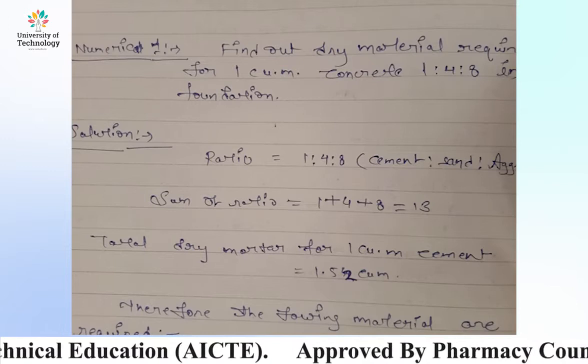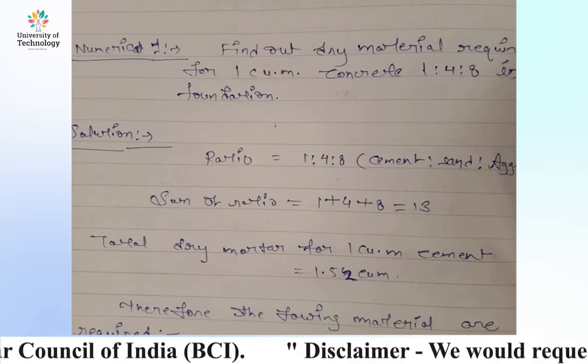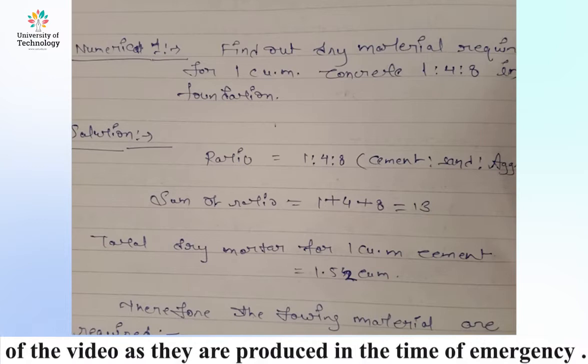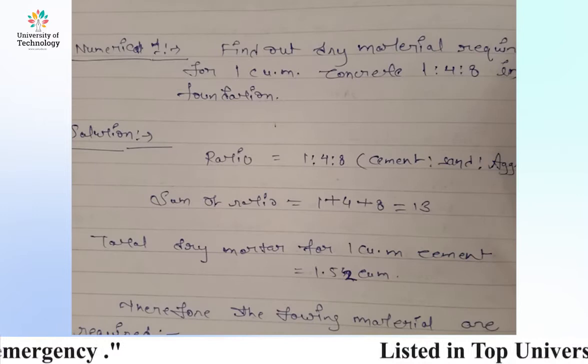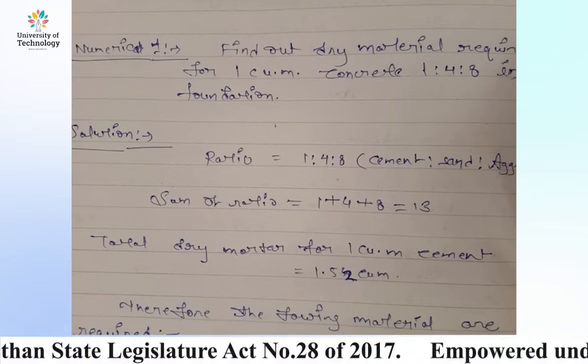Let's start with the ratio of 1:4:8. The total sum is 13. Next, the total sum of dry mortar — I will show you the table. I have 1.52, which I mentioned in the last lecture: 1 cubic meter wet mortar is equal to 1.52 cubic meters of dry mortar.